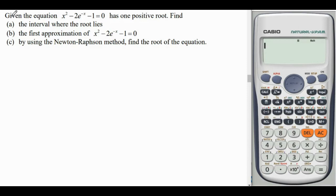Hi everyone, for this question, given the equation x² - 2e^(-x) - 1 = 0 has one positive root, find the interval where the root lies.